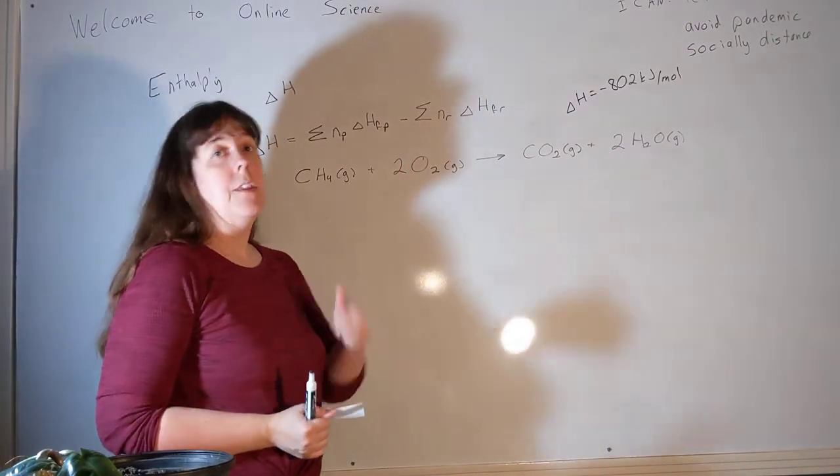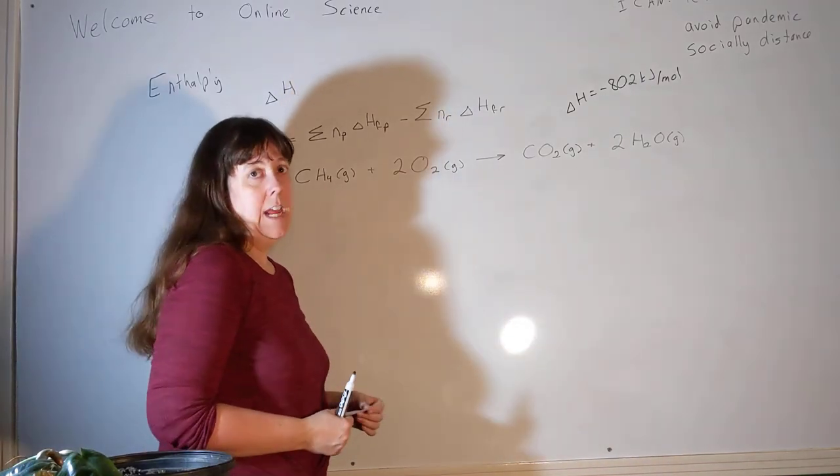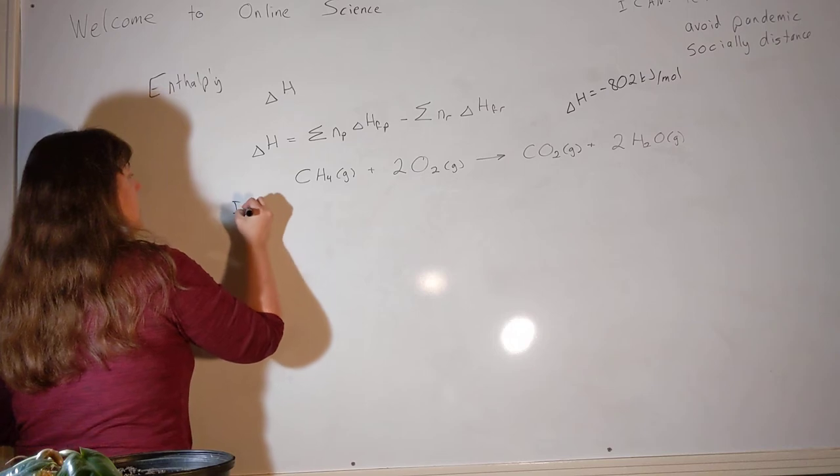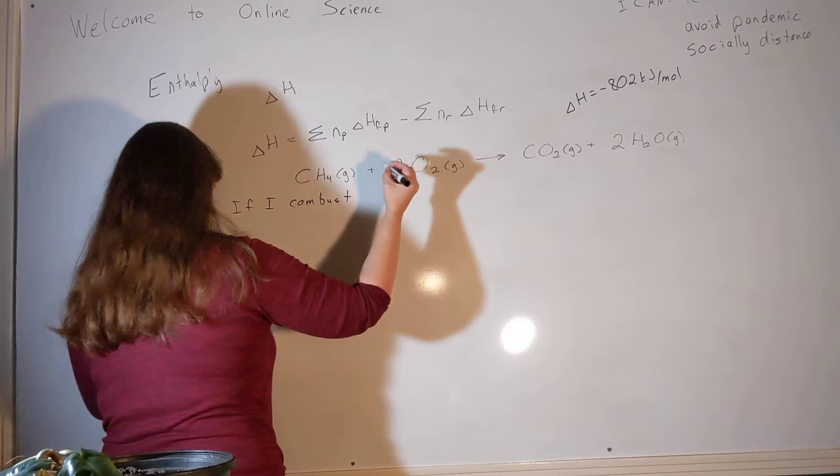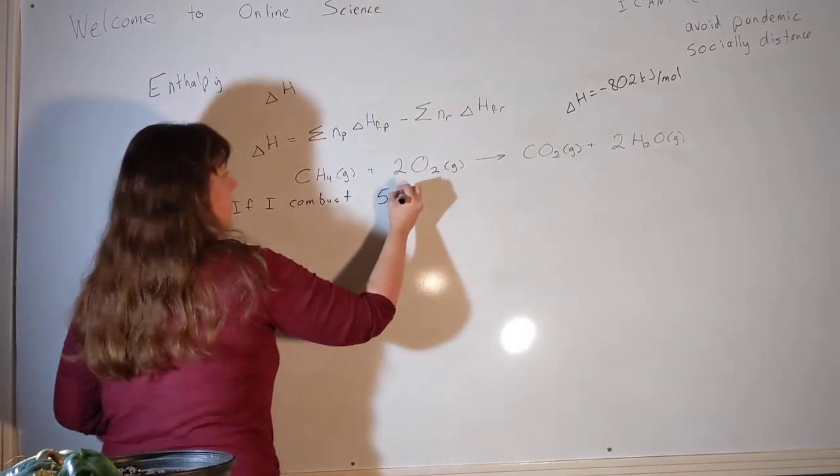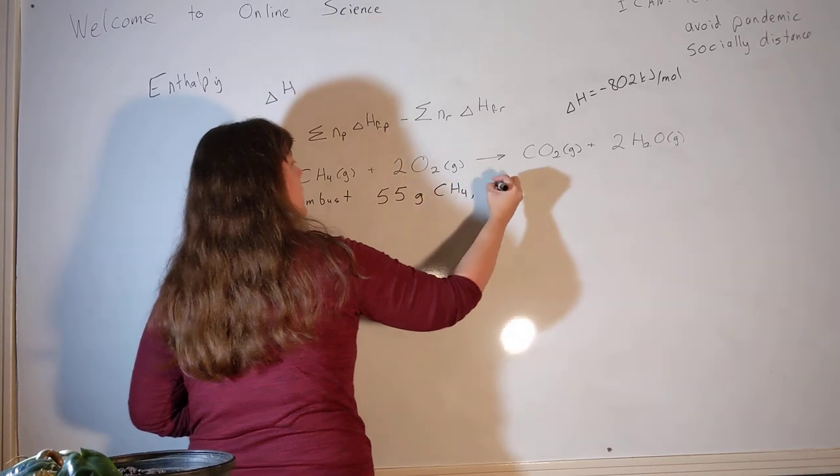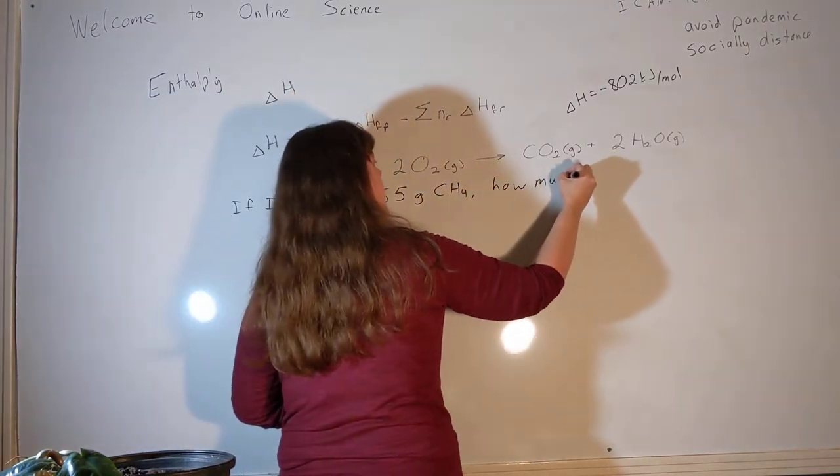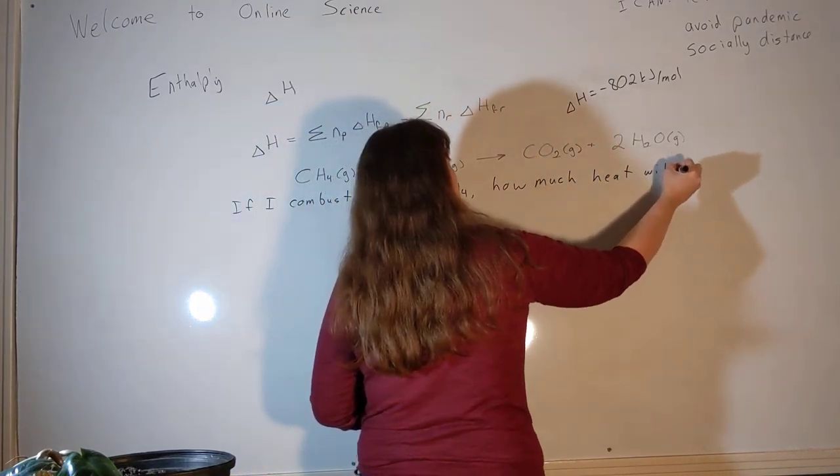Okay. So now we have a delta H value. That was our first goal today. Second goal is to figure out what can we do with that delta H value. And here's the first one. If I combust, oh, let's say 55 grams of methane, how much heat will I produce?